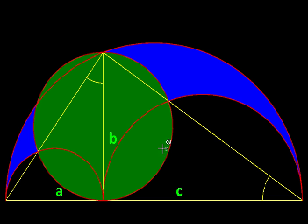Archimedes came up with a very impressive statement. He said that if you draw a circle whose diameter is given by this height, then the area of this circle is equal to the area of this arbelos.